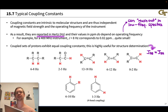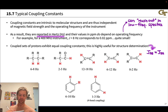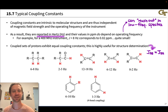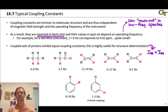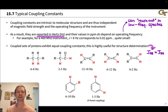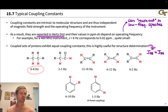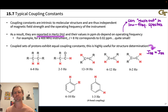Coupled sets of protons exhibit equal coupling constants. If the coupling of one hydrogen to another is 7 hertz, the reverse coupling is also 7 hertz. This allows us to identify hydrogens that have a vicinal or geminal relationship. Typical coupling constants are 6 to 8 hertz for a 1,2 dialkyl situation for alkyl protons, and so on.